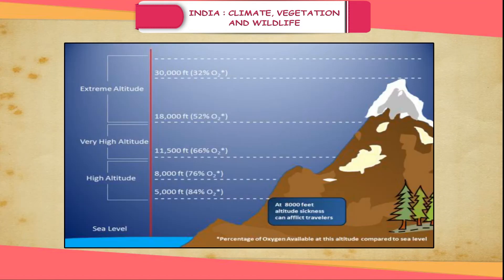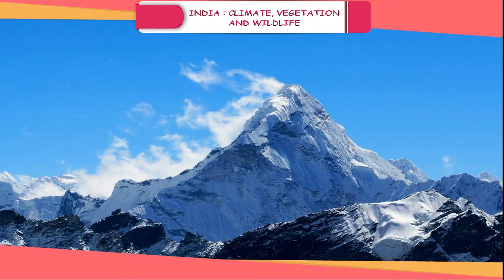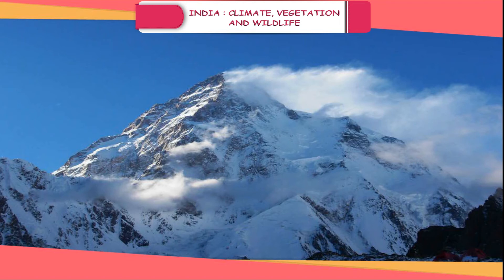Altitude: As we move up higher from the surface, we feel colder. The temperature falls at the rate of 1 degree Celsius for every 165 meters. This effect is felt in the mountains and plateaus. This explains why places experience great heat in summers while the Himalayas are much cooler.